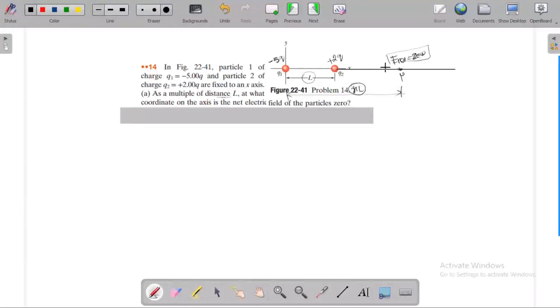At some point, the net electric field is zero. Here we have a positive charge and a negative charge. If we choose a point between Q1 and Q2, the electric field because of particle 2 is towards particle 2. For a positive charge, the electric field line is away from the charge.